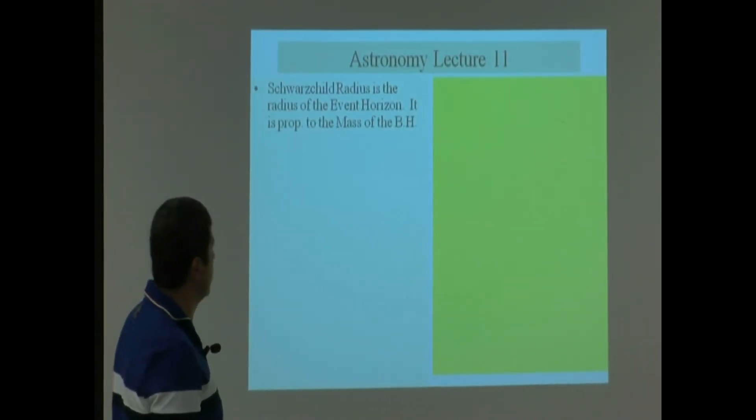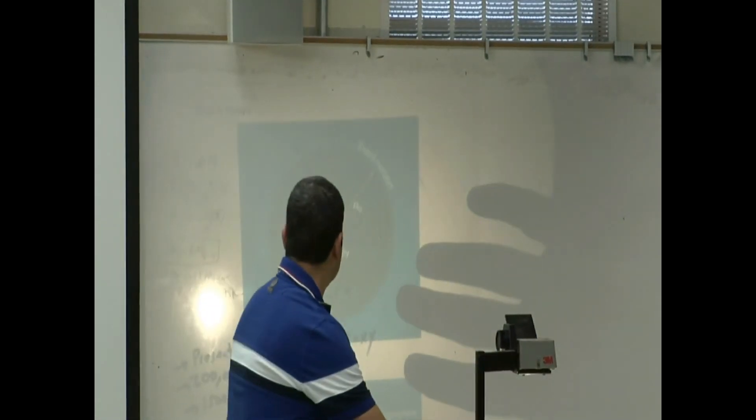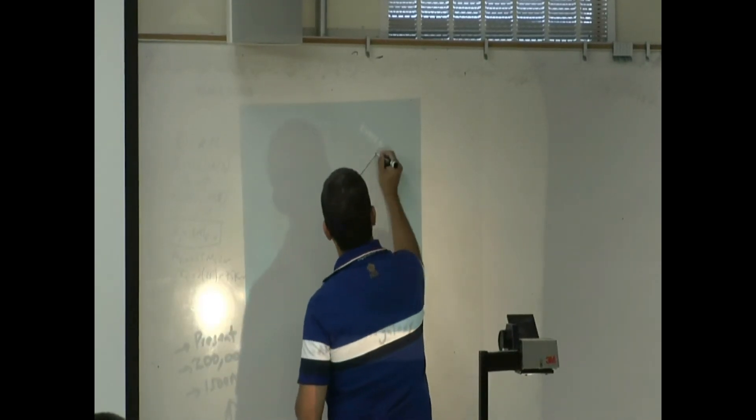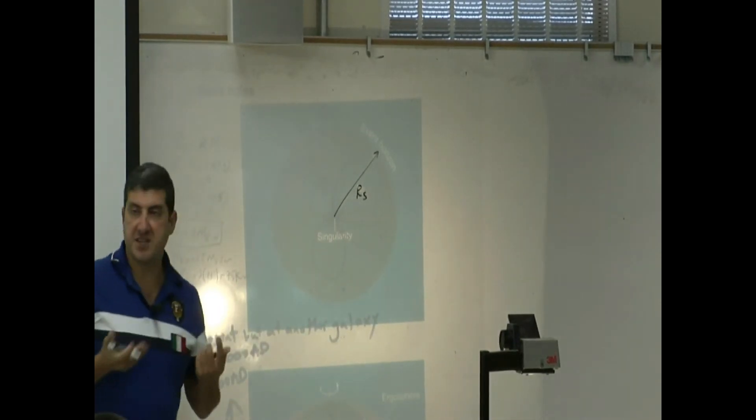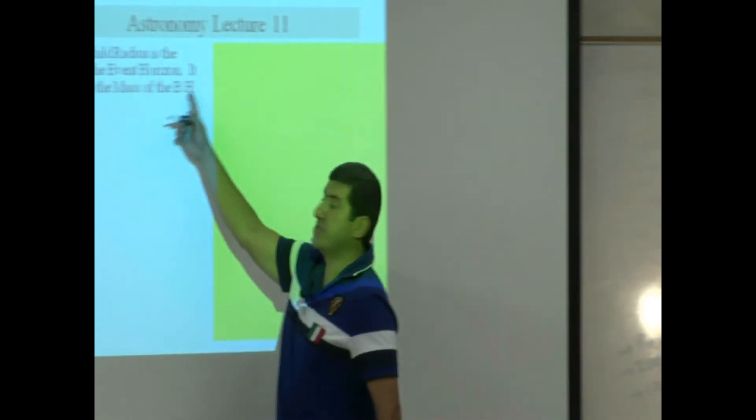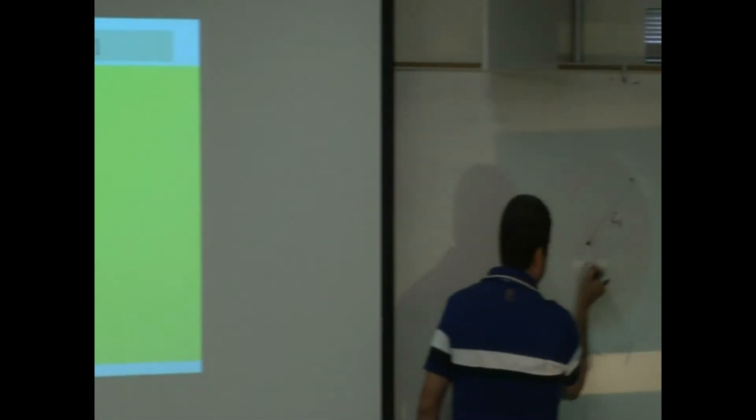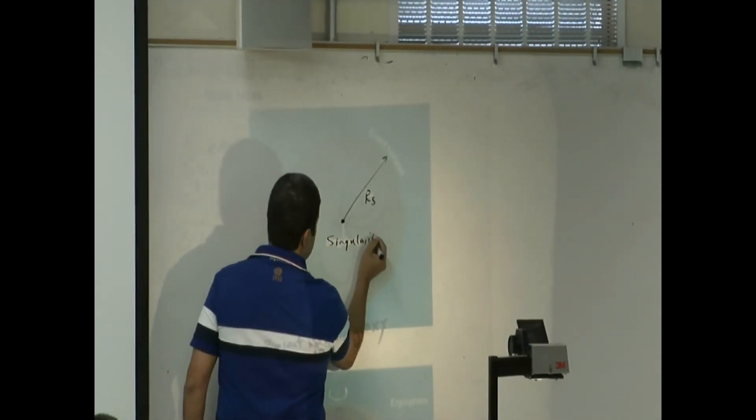Schwarzschild radius is the radius of the event horizon. So if we go back to that other picture, that's the radius of this guy from here to here. How big is that Schwarzschild radius? It is proportional to the mass of the black hole. So where is the mass of the black hole concentrated? It's in a singularity.